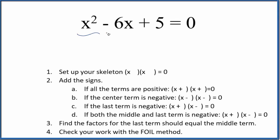Let's factor the equation x squared minus 6x plus 5 equals 0. So we're going to use these rules here, these steps, to factor this equation.